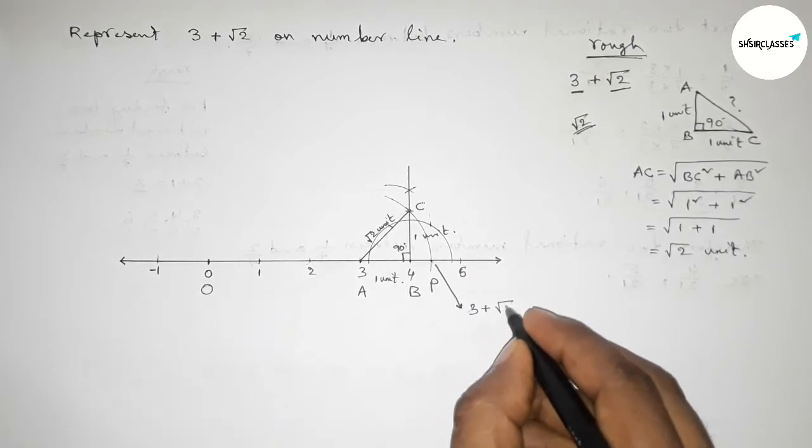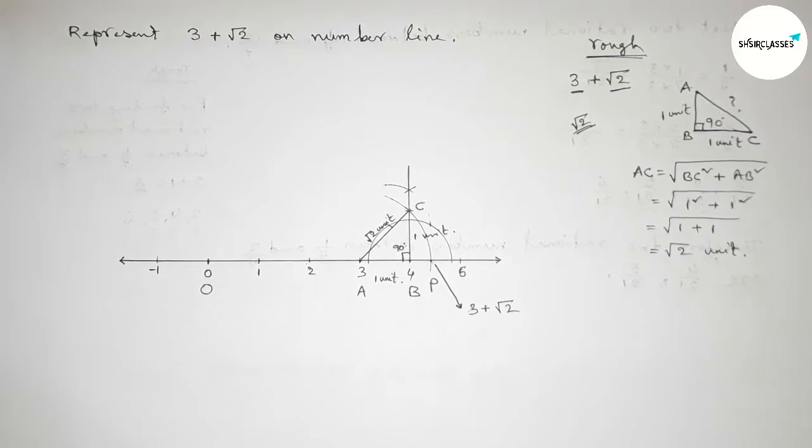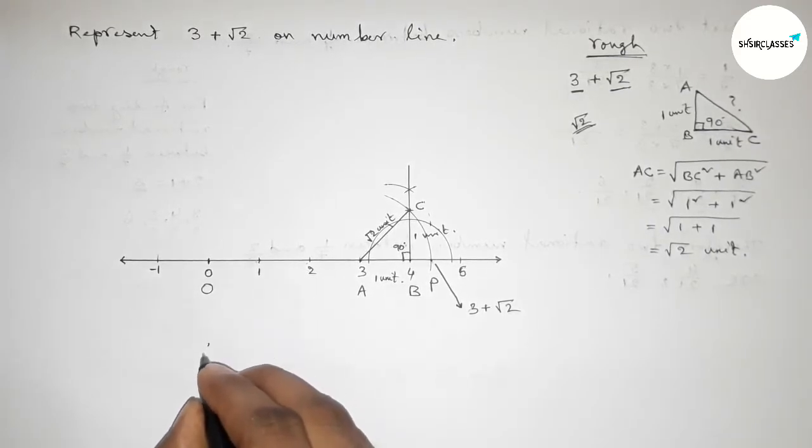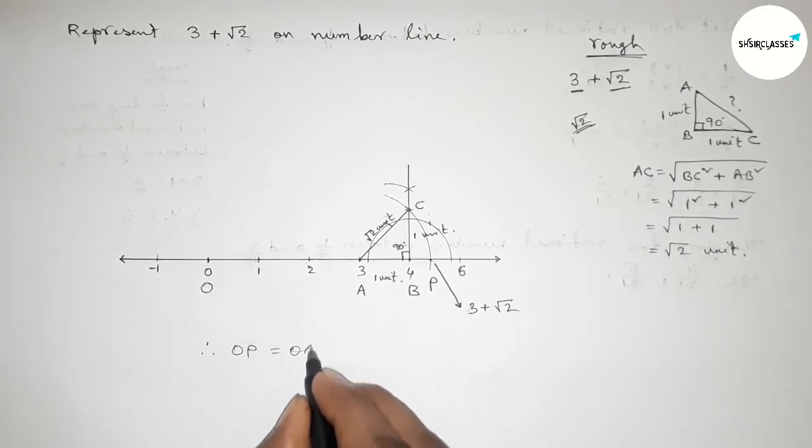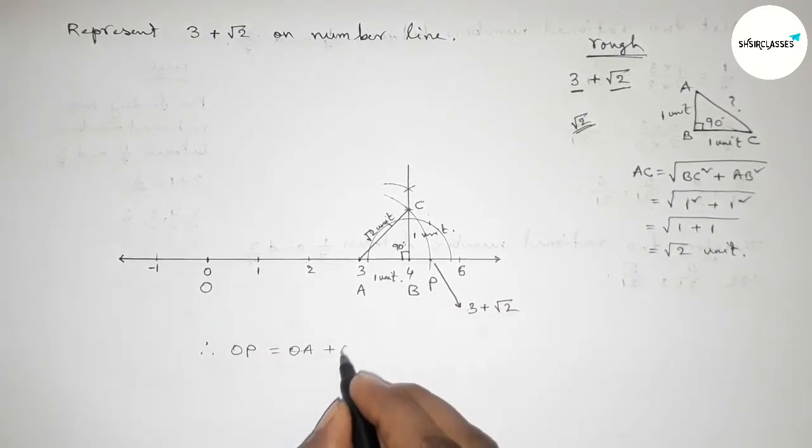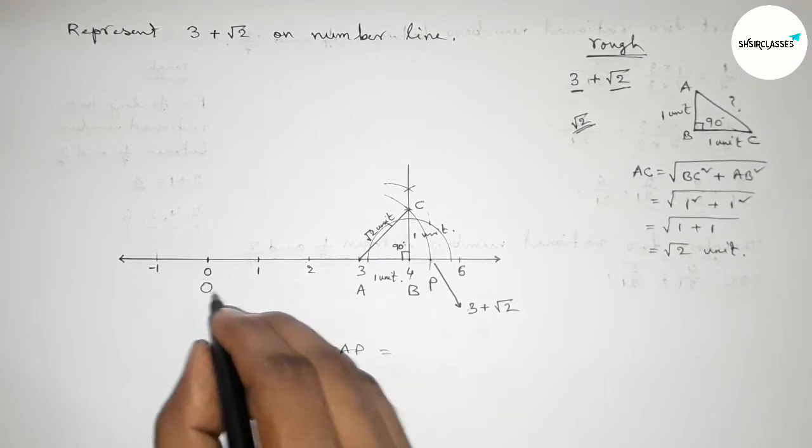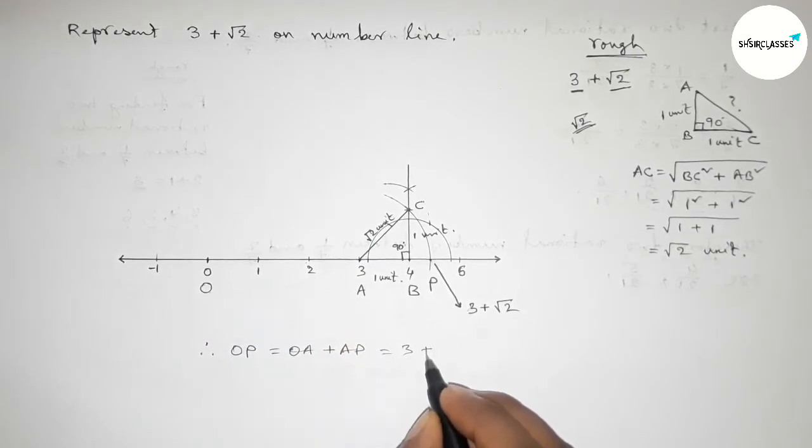This is 3 plus root 2 on the number line. Therefore, OP equals OA plus AP, where OA equals 3 unit length and AP equals root 2 unit.